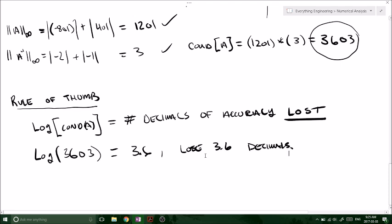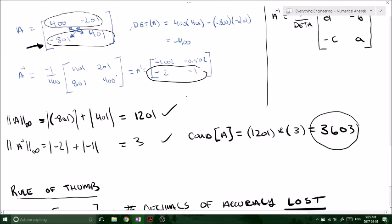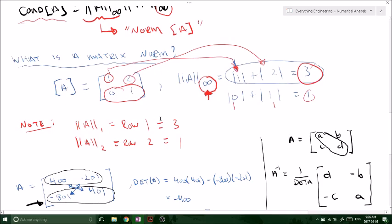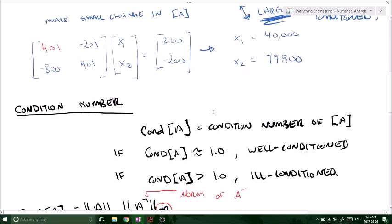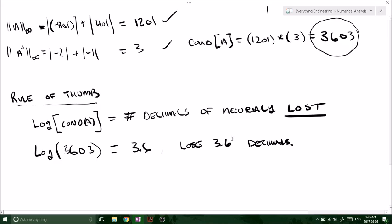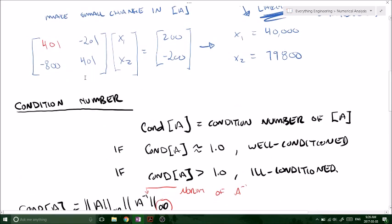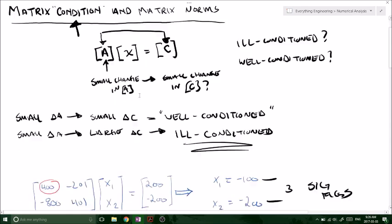And looking back at our original matrix, if we lose 3.6 decimals of accuracy, that's pretty big because we've only got 3 sig figs in our original matrix A, and then in our solution, we've also got 3 sig figs. So this system is definitely ill-conditioned, right? Because we've got a large change in A. If we look back when we did the example, we proved it out.